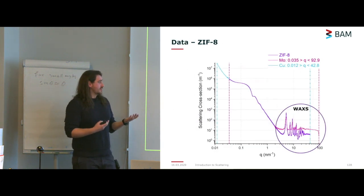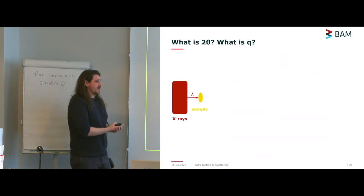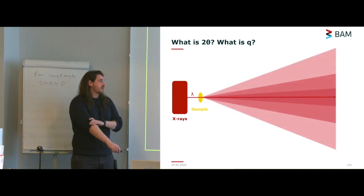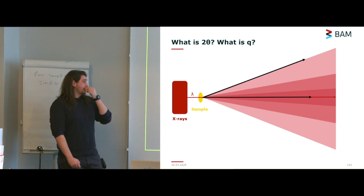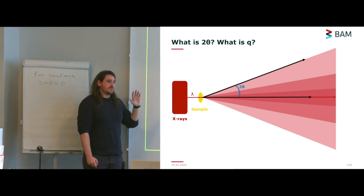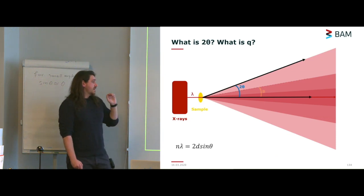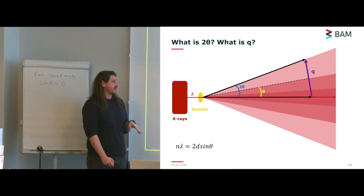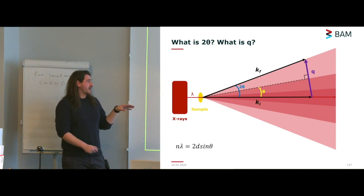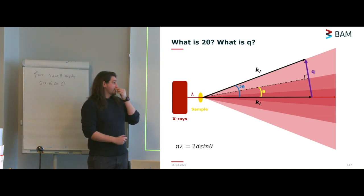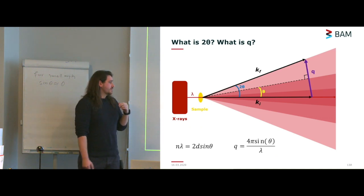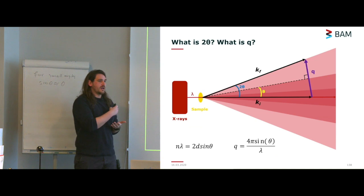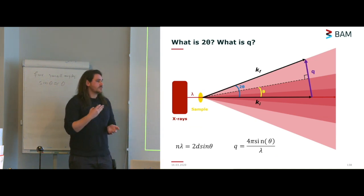Let's see where Q and 2-theta actually come from. You have your X-rays hitting your sample at a certain wavelength, producing scatter at a certain angle — that angle is 2-theta, which is what is measured in XRD patterns. Q is the scattering vector: the difference between your incident vector and your final vector. Instead of measuring the angle, you measure this vector. When comparing XRD patterns you need to know what source you're using, but once you have your SAXS data in Q, the source doesn't matter as much because you've already corrected for it.